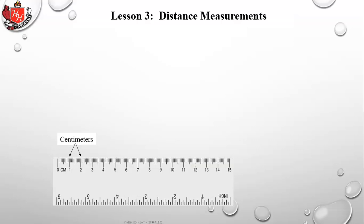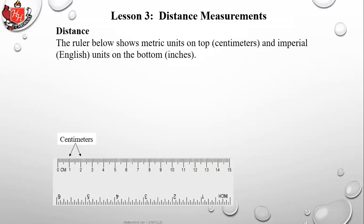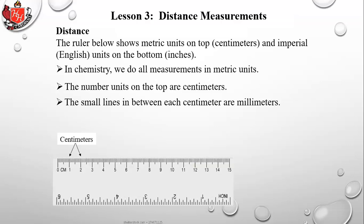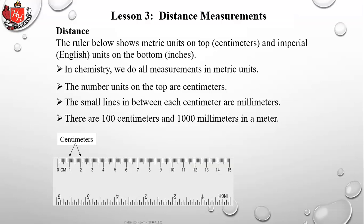Now we move into measurements and how to read lab equipment. You'll frequently work with a meter stick or ruler with centimeter gradations. The ruler shows metric units on top (centimeters) and imperial units on the bottom (inches) — in chemistry we always use metric. A centimeter is one-hundredth of a meter; a millimeter is one-thousandth of a meter, with 10 millimeters per centimeter and 100 centimeters per meter.